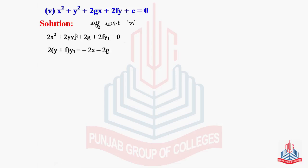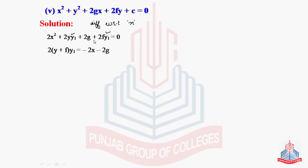We have y1 appearing in two terms, so taking y1 as a common factor gives 2(y + f)·y1, and the remaining terms 2x and 2g are shifted to the right-hand side becoming −2x − 2g. Finally, y1 equals −2(x + g) divided by 2(y + f); the 2s cancel, giving y1 = −(x + g)/(y + f).